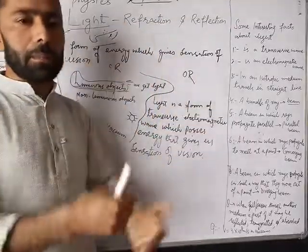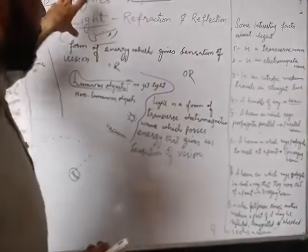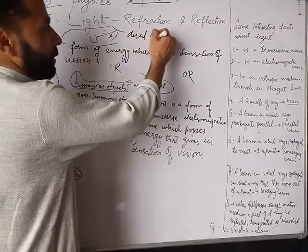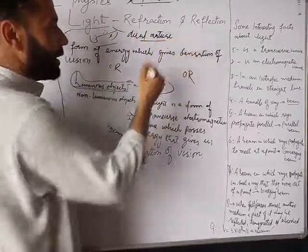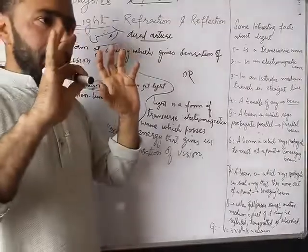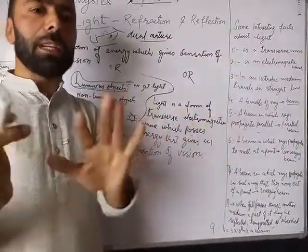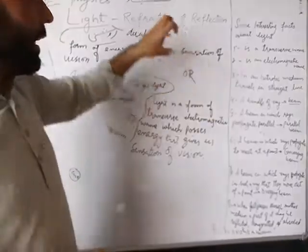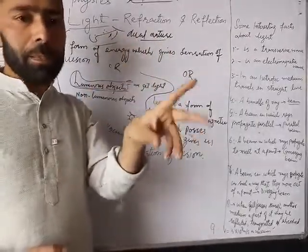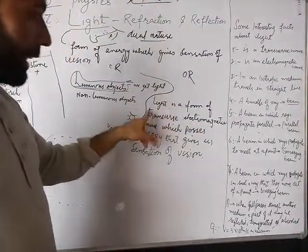It is possible that in the coming time some other nature may also be discovered. But for now, remember: light has a dual nature. Dual nature means — it behaves simultaneously as both a wave and a particle. So light has both natures: wave as well as particle. And for all its propagation, it is an electromagnetic wave. This is the definition of what light is.